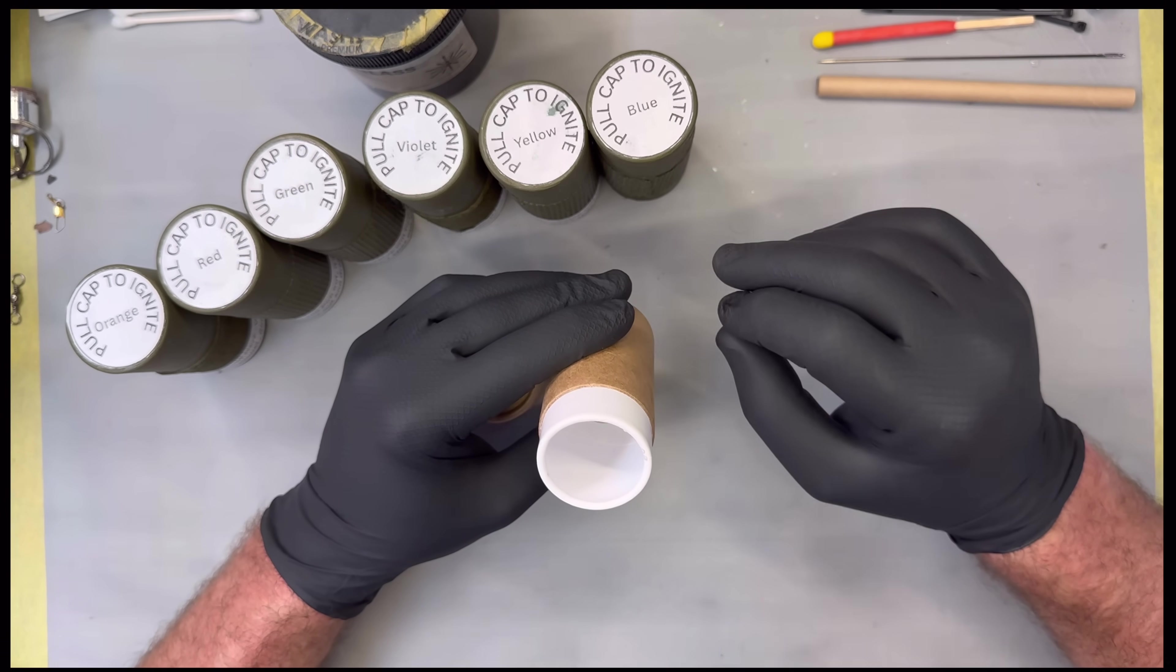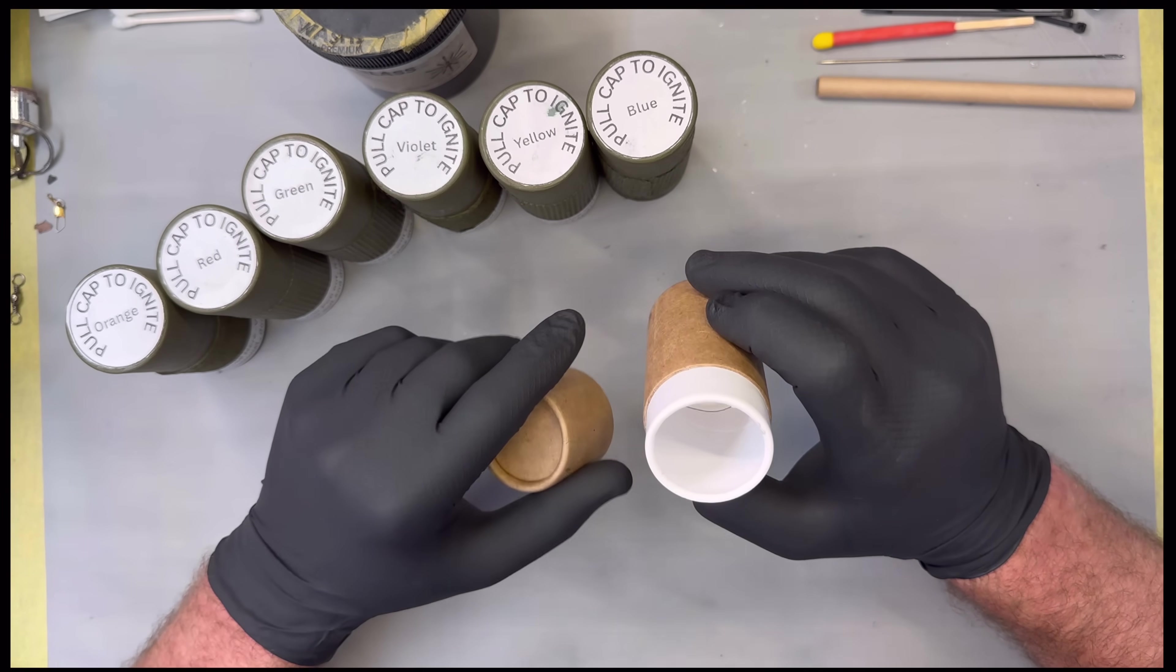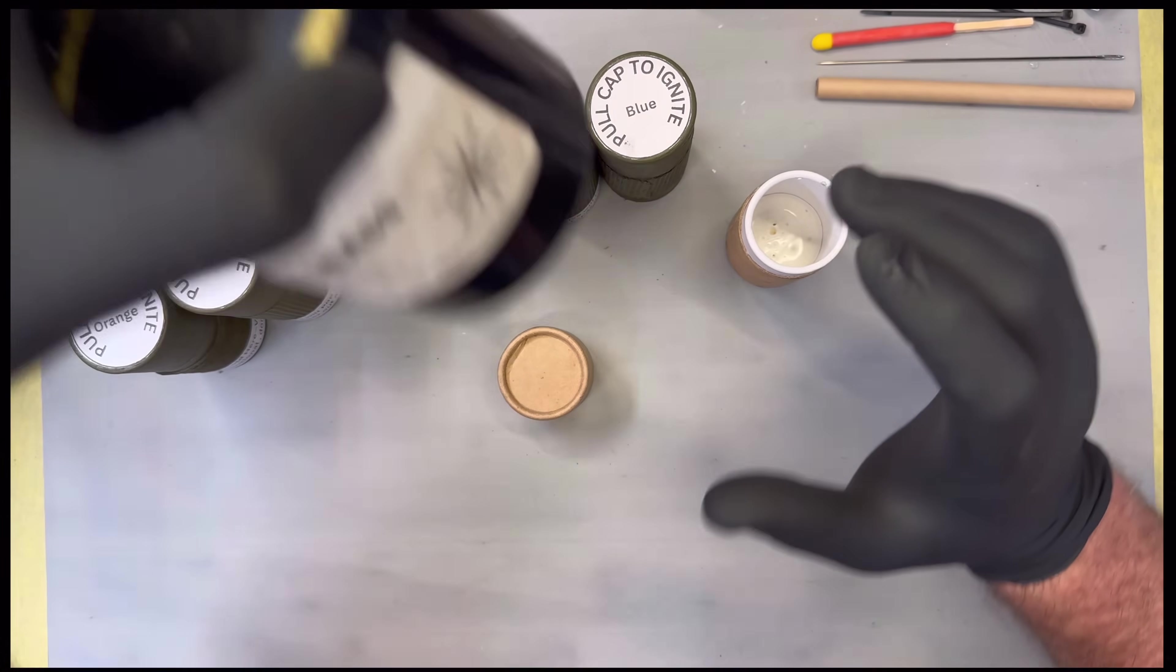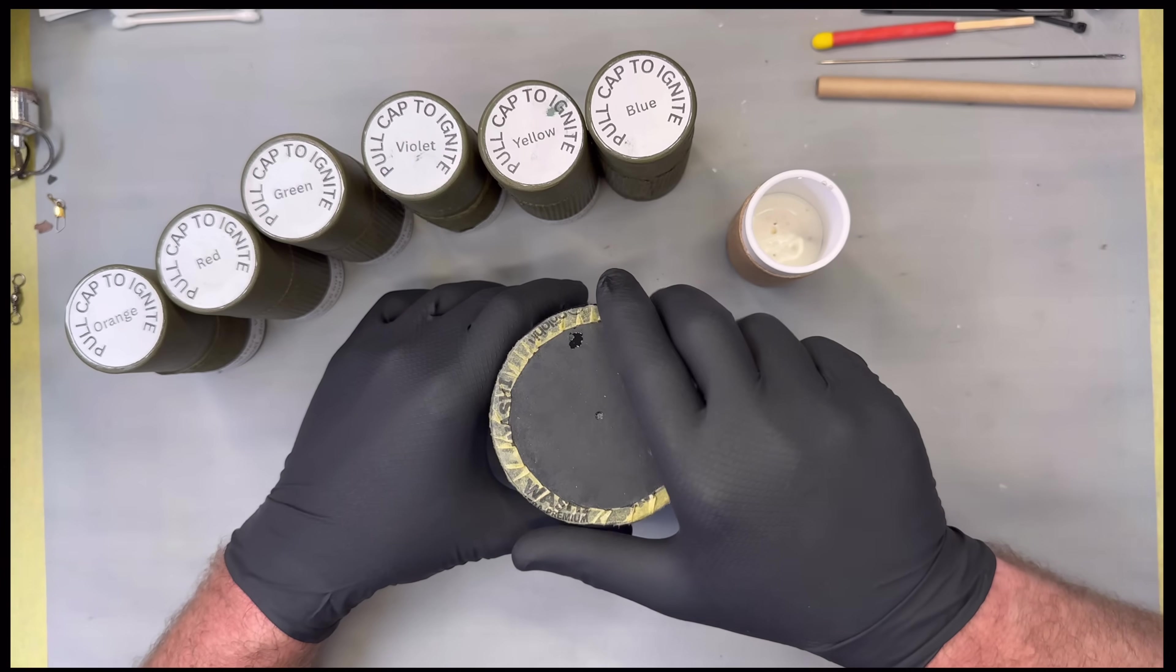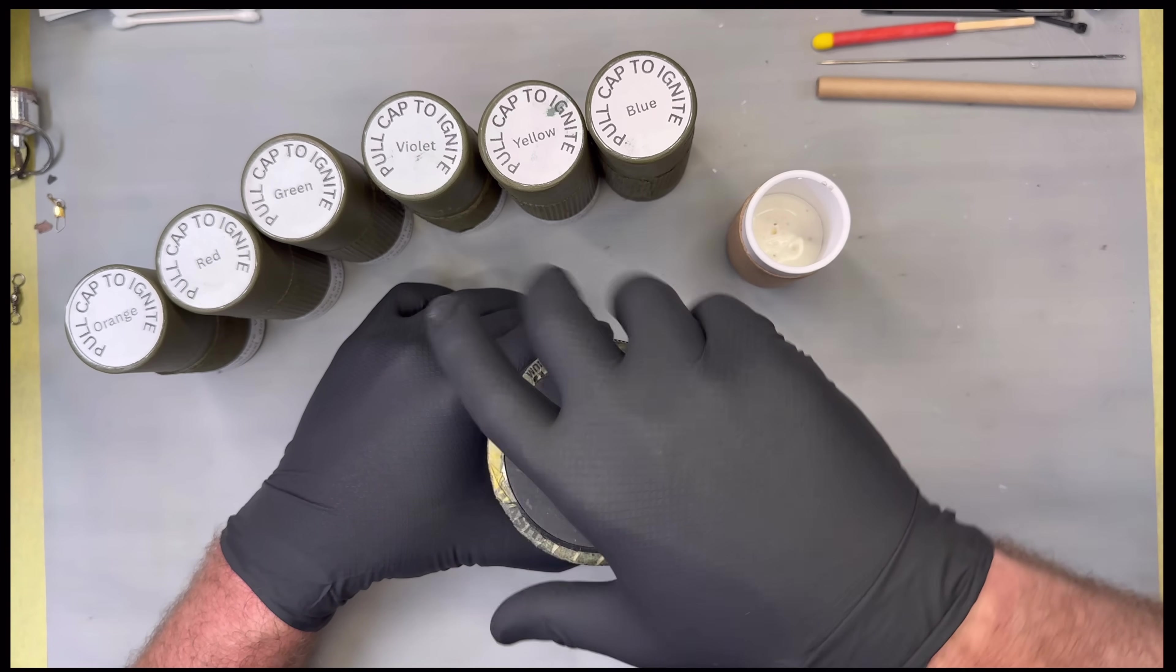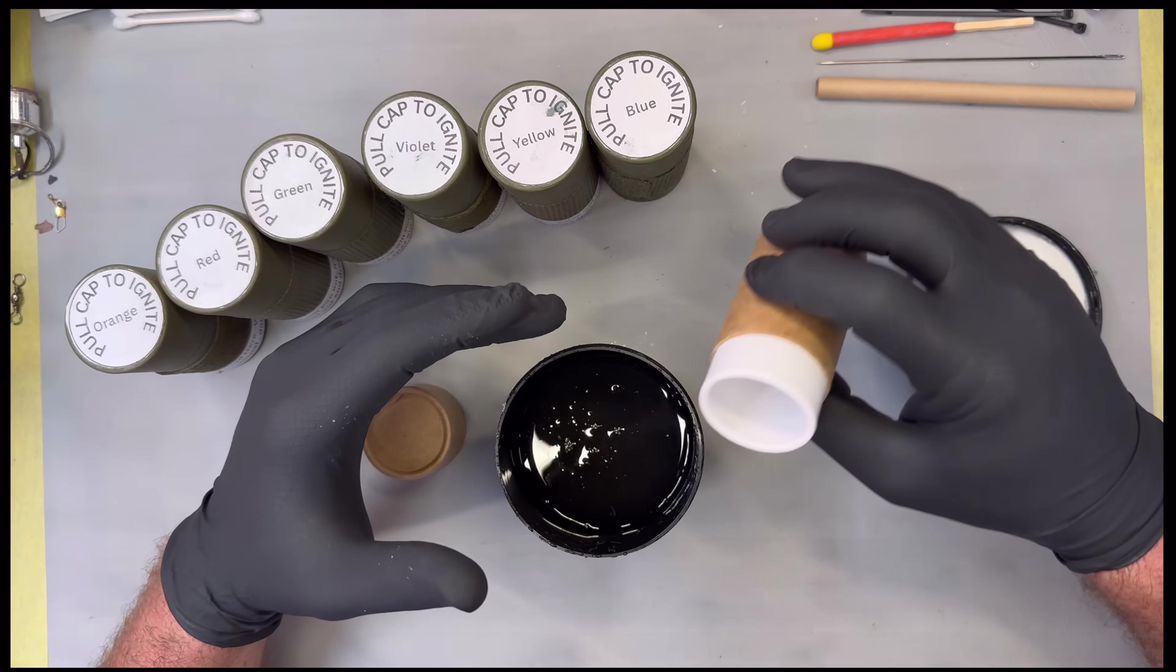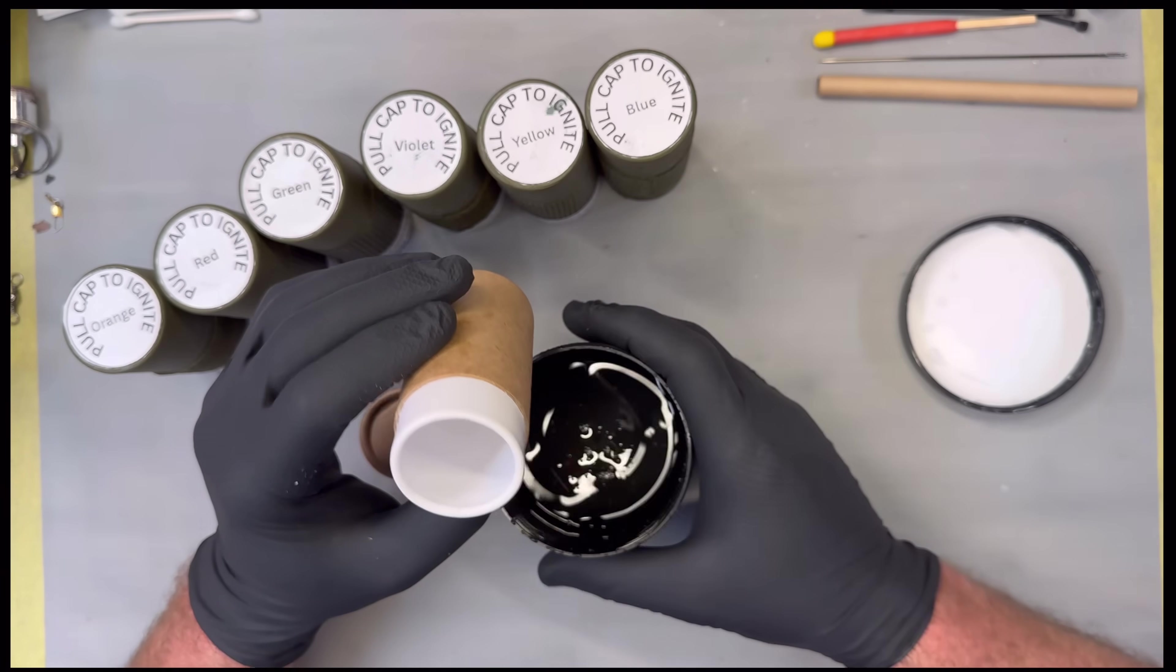The next step we do is get some water glass, which is sodium silicate, and we're just gonna fireproof this tube. You can literally just pour it in.